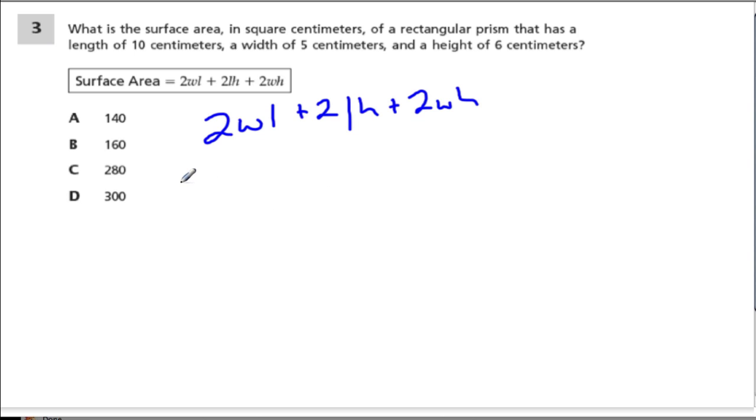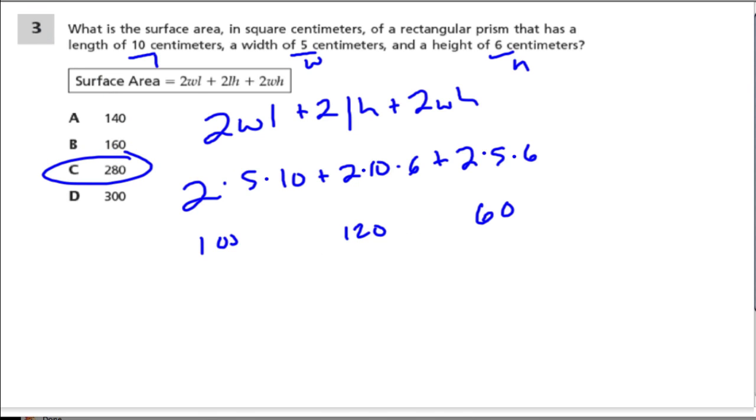I'm going to underline these measurements and write what they are next to them so I don't lose track. So it's 2 times 5 times 10 plus 2 times 10 times 6 plus 2 times 5 times 6. This is 30 times 2 or 60, 60 times 2 or 120, 50 times 2 or 100. Added together, we get 220 plus 60, and our answer is 280.